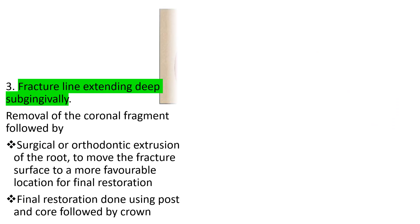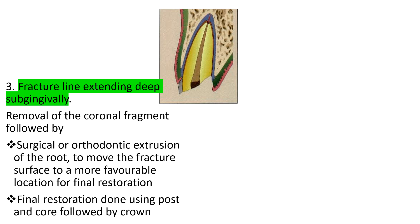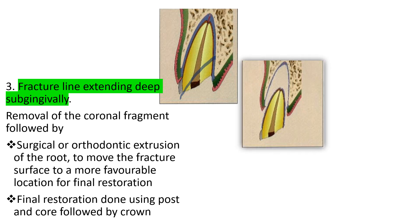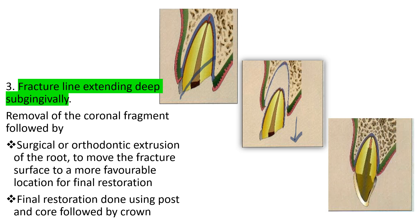In a third situation where the fracture line extends deep subgingivally, it is not possible to do gingivectomy or osteotomy to bring the fracture line to a favorable location. So instead, we pull out the root surgically or orthodontically — extruding it to a more favorable location. Once we reach this favorable location, we restore the tooth with a post, followed by a core and then a crown, giving our final restoration.